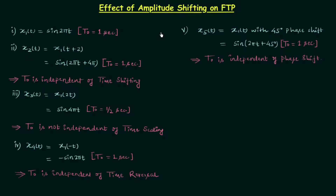In the last two lectures we have already seen what will happen to the fundamental time period when we perform different operations on time. To understand this we took one example signal x1(t) = sin(2πt), then we performed time shifting and got a new signal x2(t). We calculated the fundamental time period and found the two fundamental time periods are the same. This means fundamental time period is independent of time shifting — this is one important thing to remember.